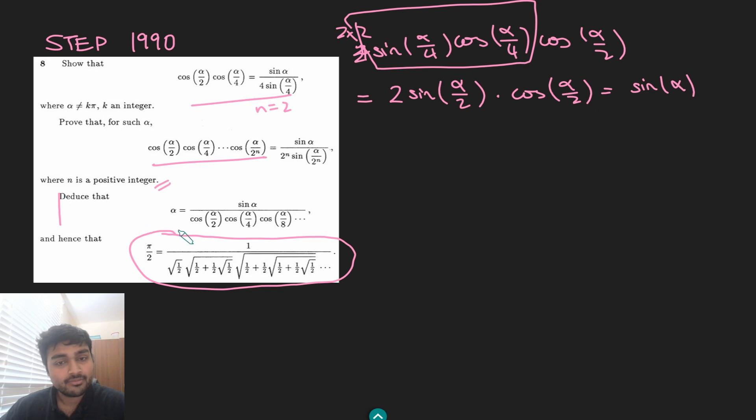The next part, deduce that alpha equals sine of alpha over this infinite product here. And again, this starts with deduce, so we want to use the previous part. And it's relatively clear how we want to use this.